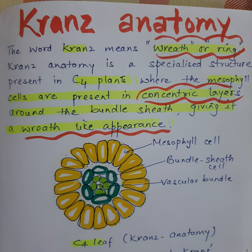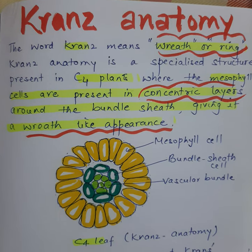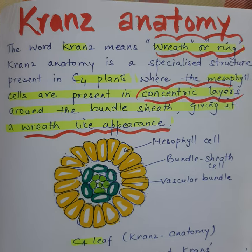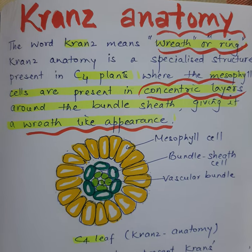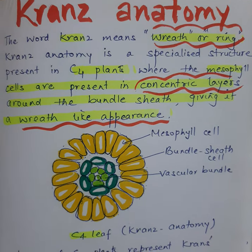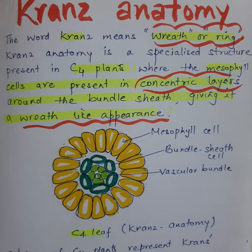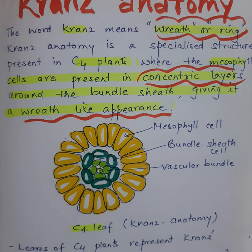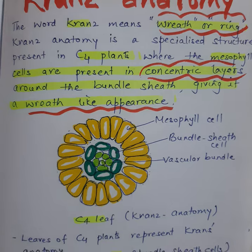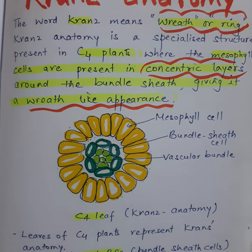We are going to discuss Kranz anatomy. The word 'Kranz' is a German word which means wreath or ring. Kranz anatomy is a specialized structure present in C4 plants, where the mesophyll cells are present in concentric layers around the bundle sheath cells, giving it a ring-like appearance, as you can see in the diagram below.